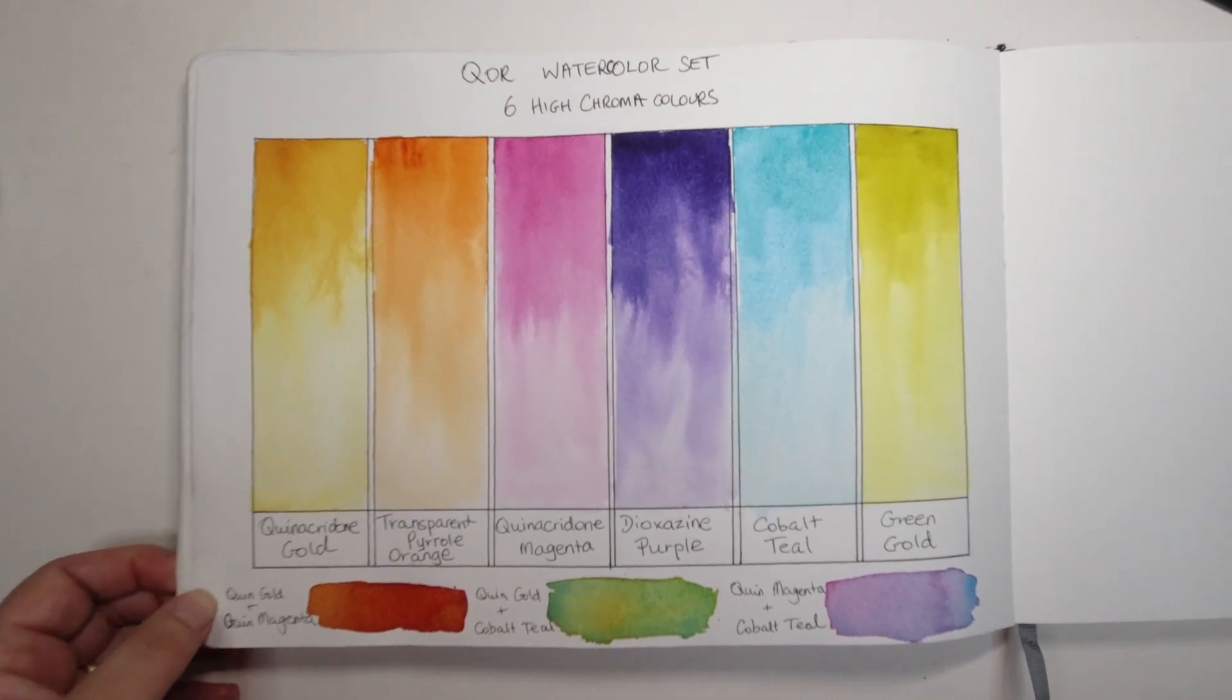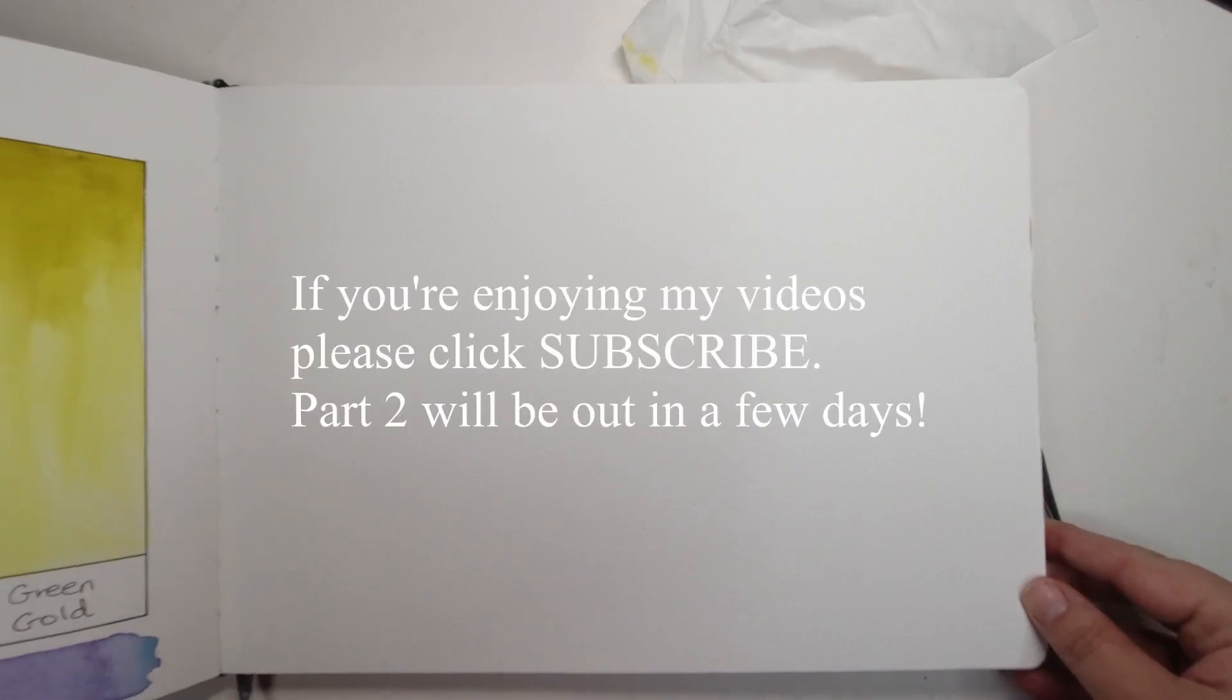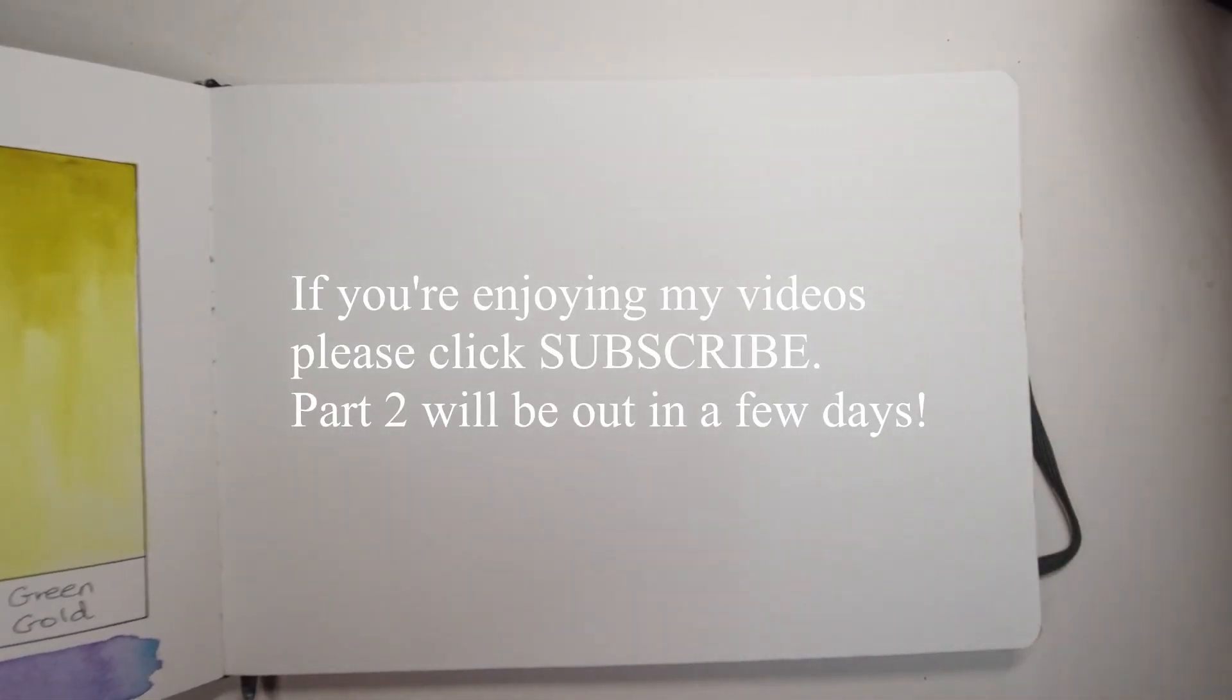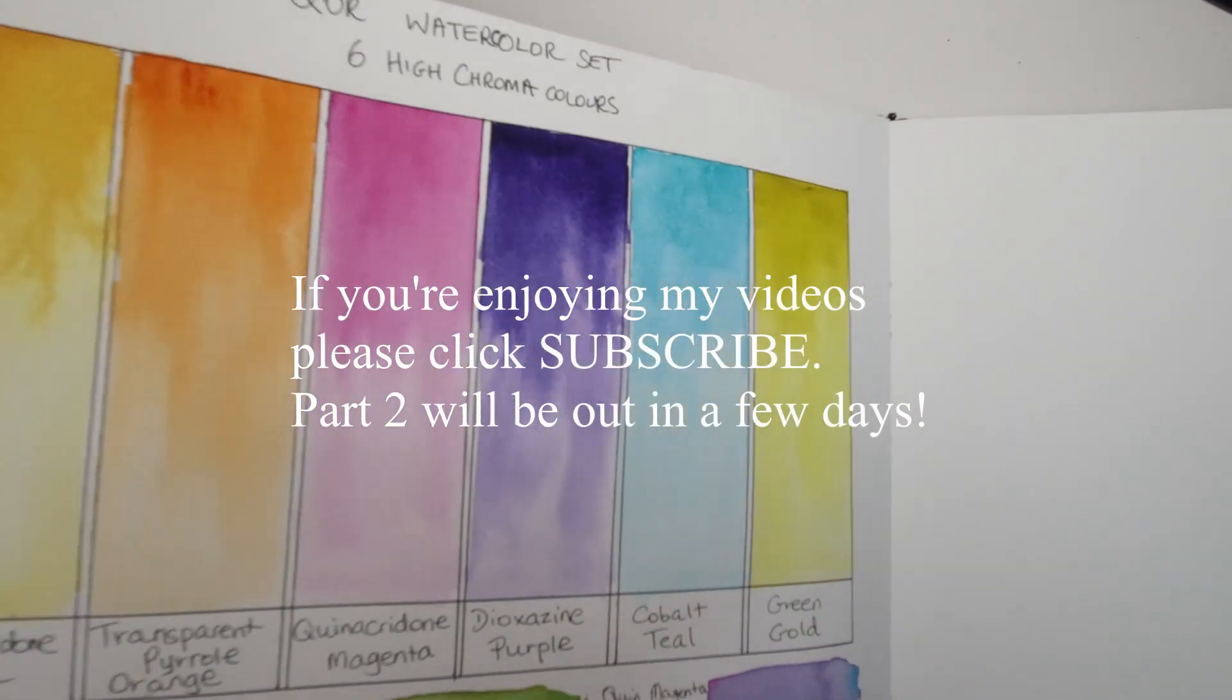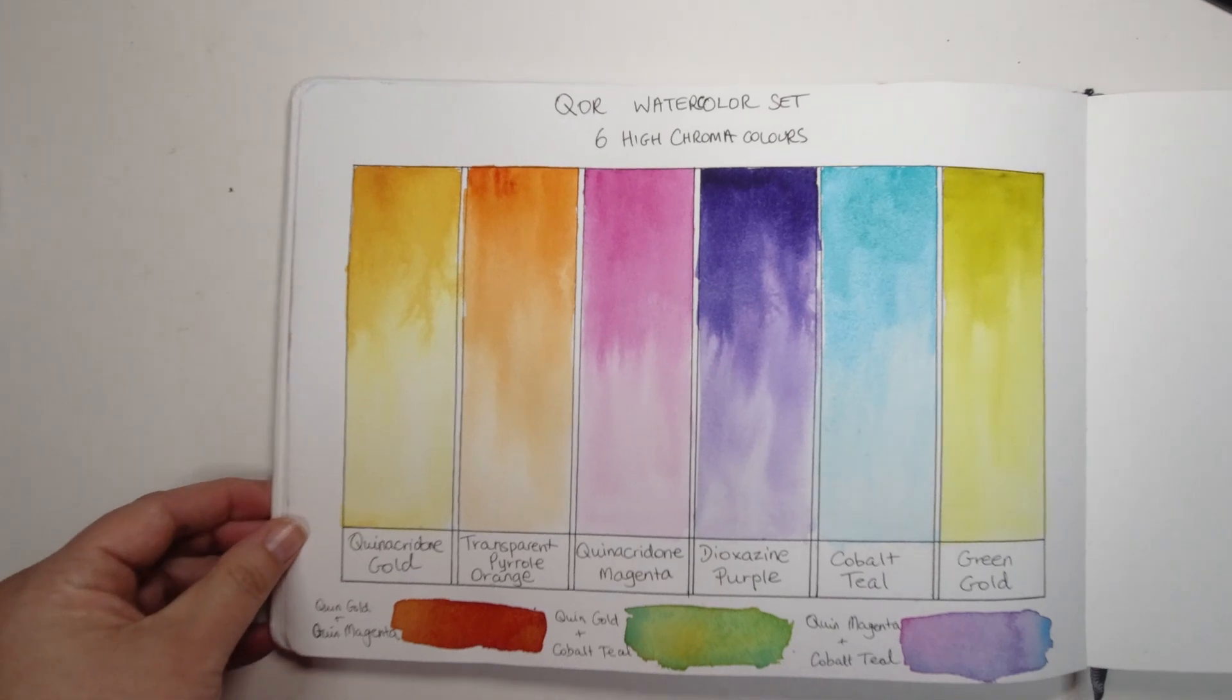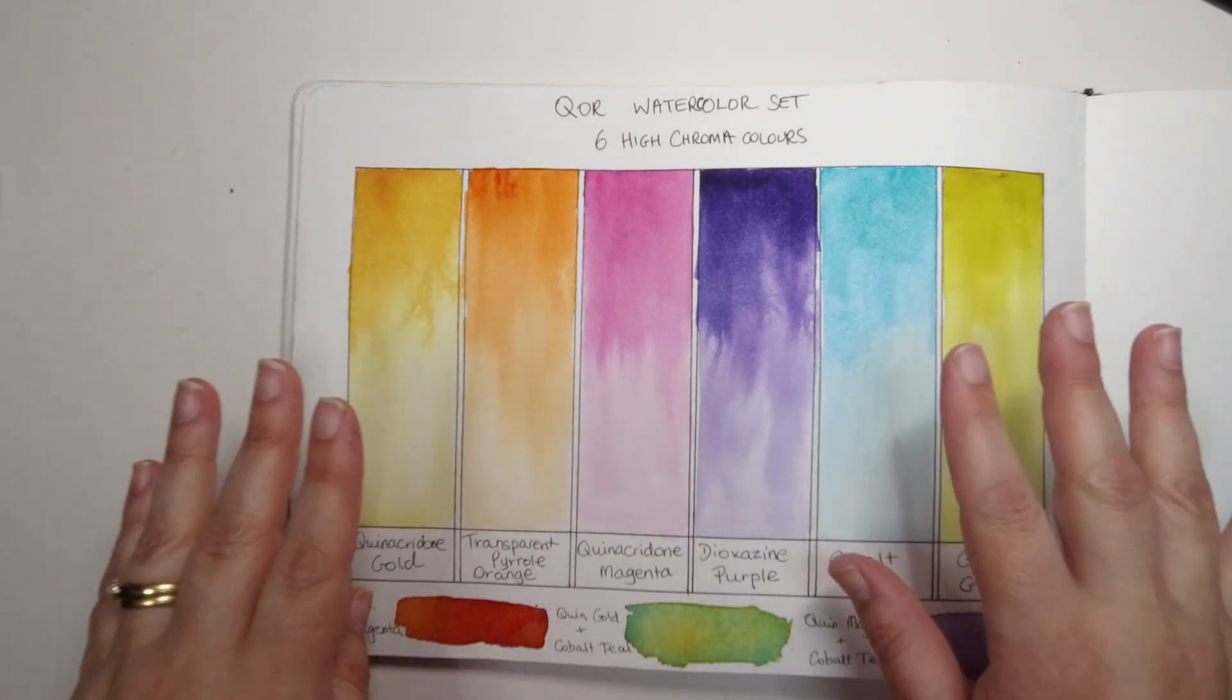So that's the end of this swatching. Here we have a lovely blank page and I don't know how that tissue got in there. I'm going to do a painting using these six colors and we'll see what we can get. At the moment I have absolutely no idea what I'm going to paint but we'll find out next time. Until then, I'll swatch you later.